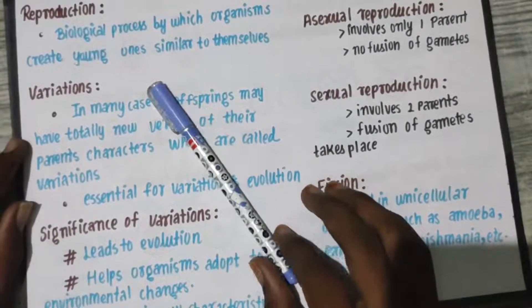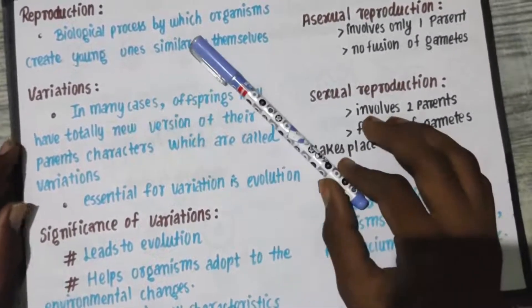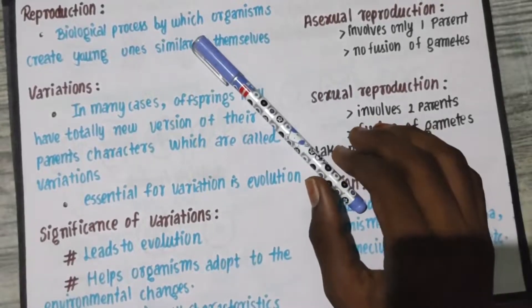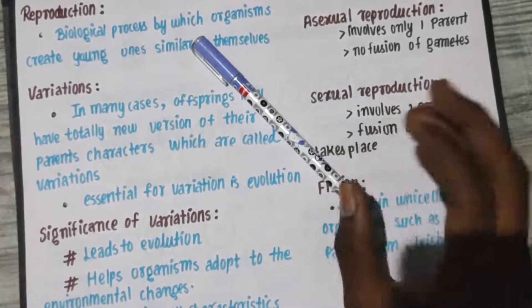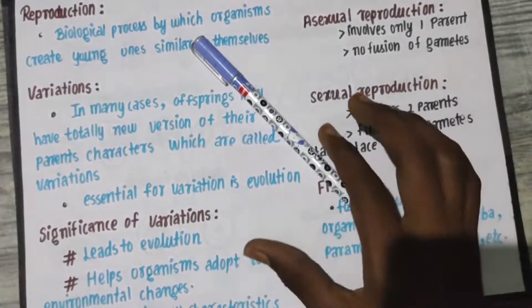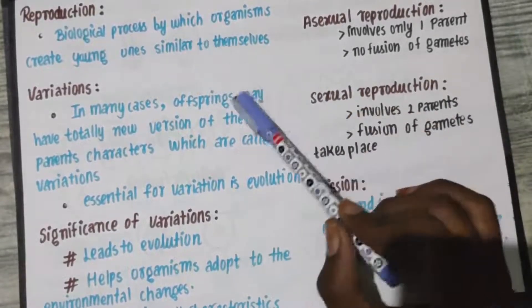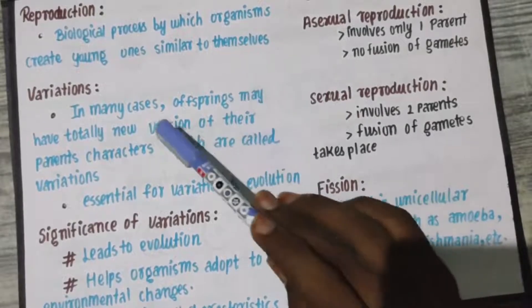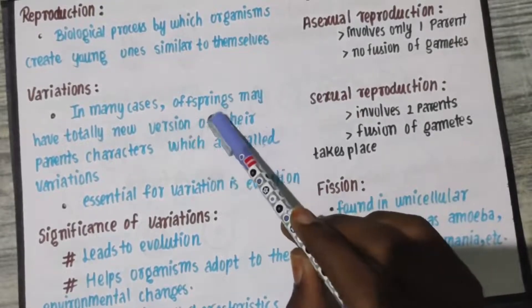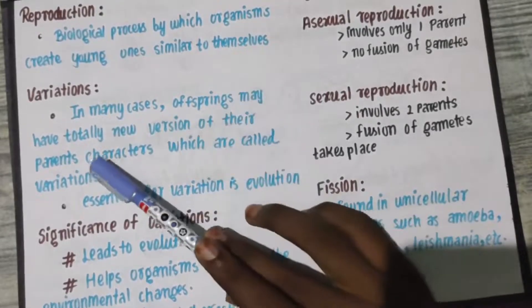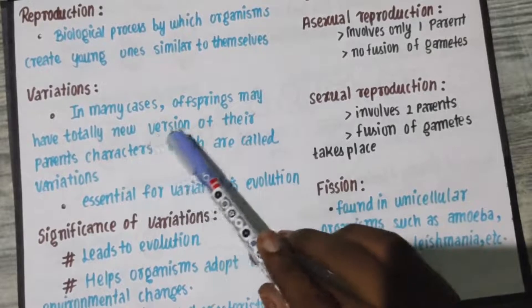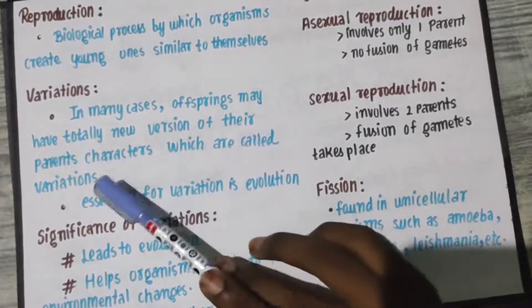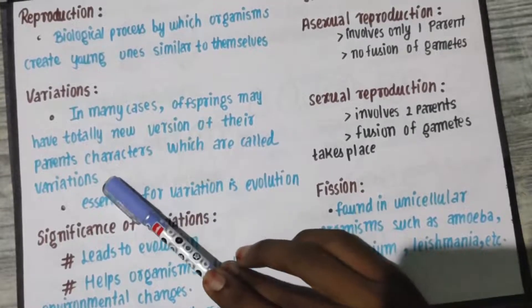Next, in the case of sexually reproducing organisms, offspring are going to be produced. In many cases, offspring may have a totally new version of their parent characters, which are called variations.